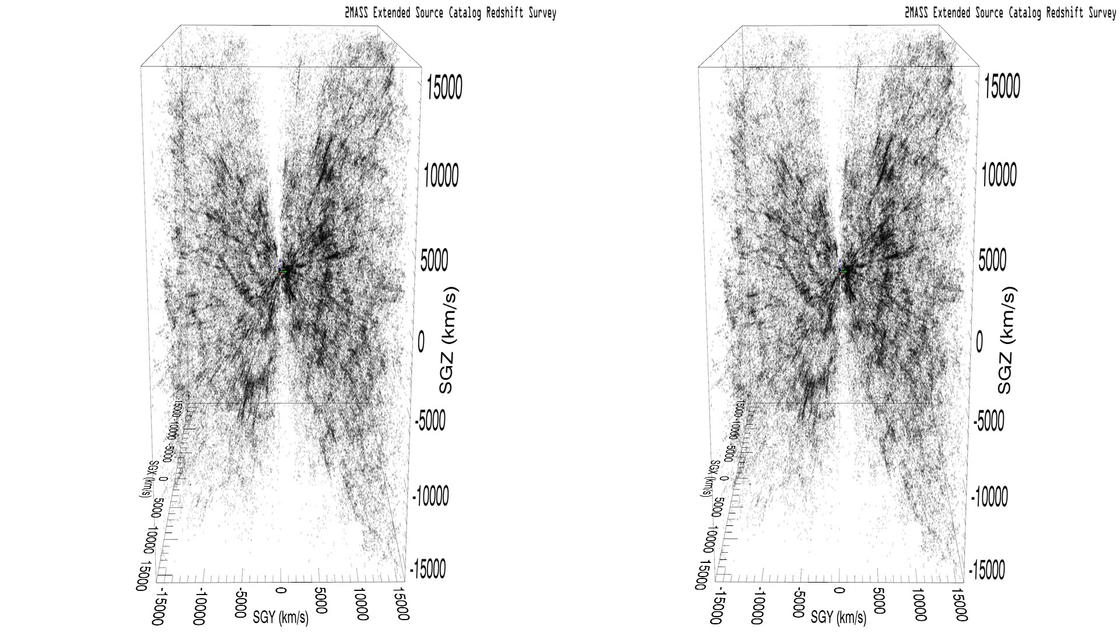The flux-limited selection of this survey results in a spatial coverage that is densest near the center. As we just saw during the zoom out, obscuration by the Milky Way creates the large vertical artificially vacant zone.